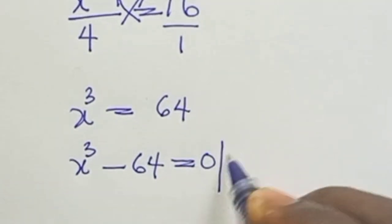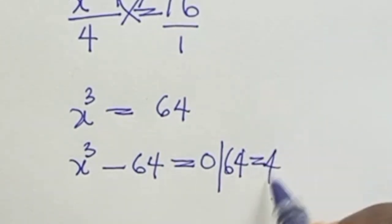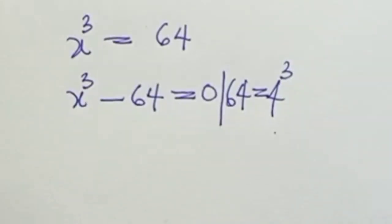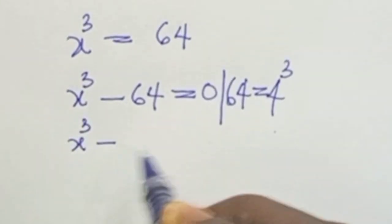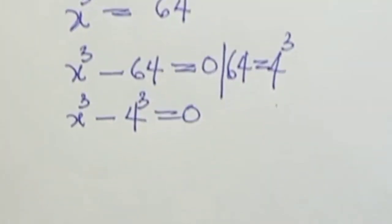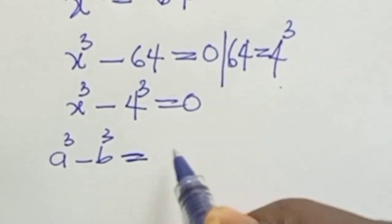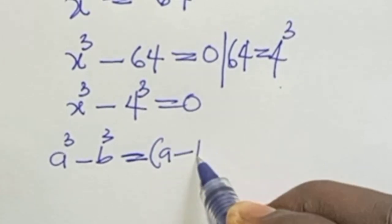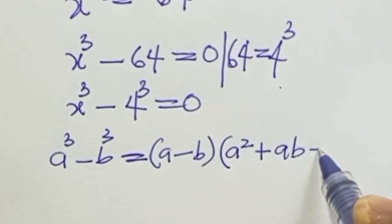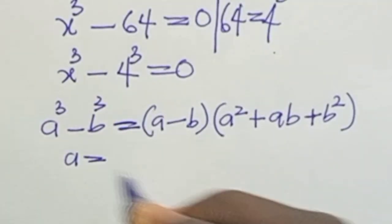Remember, 64 can be written as 4 to power 3. So in place of 64 we put 4 to power 3, giving s to power 3 minus 4 to power 3 equals 0. Now consider the identity: a to power 3 minus b to power 3 equals a minus b times a squared plus ab plus b squared.